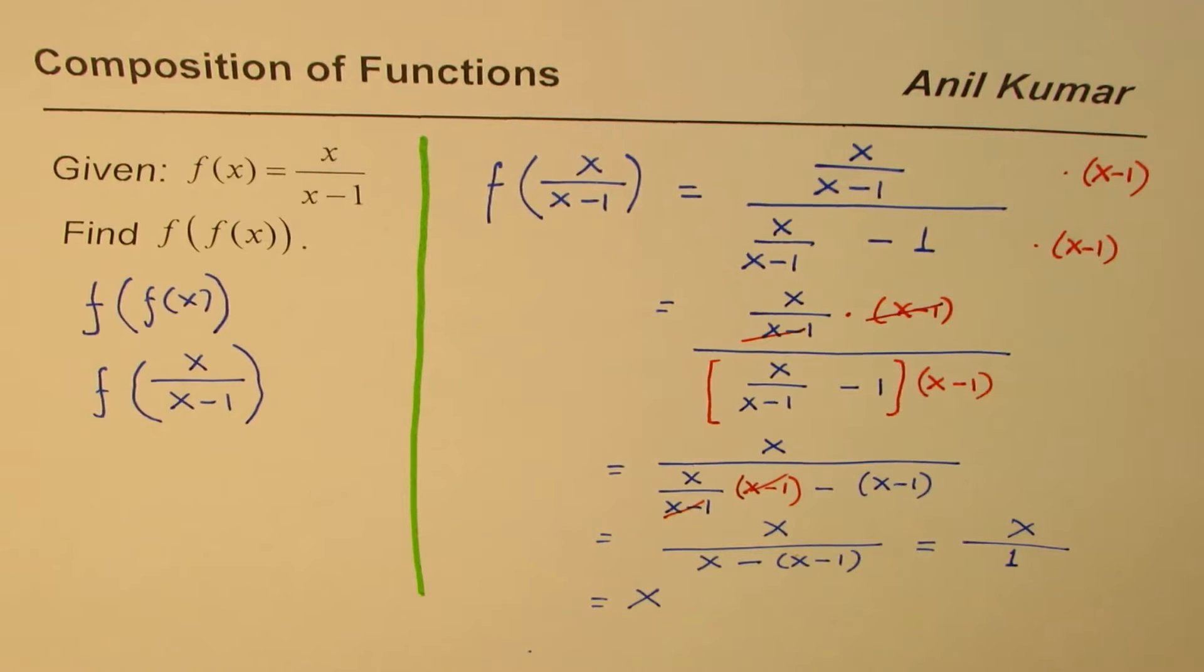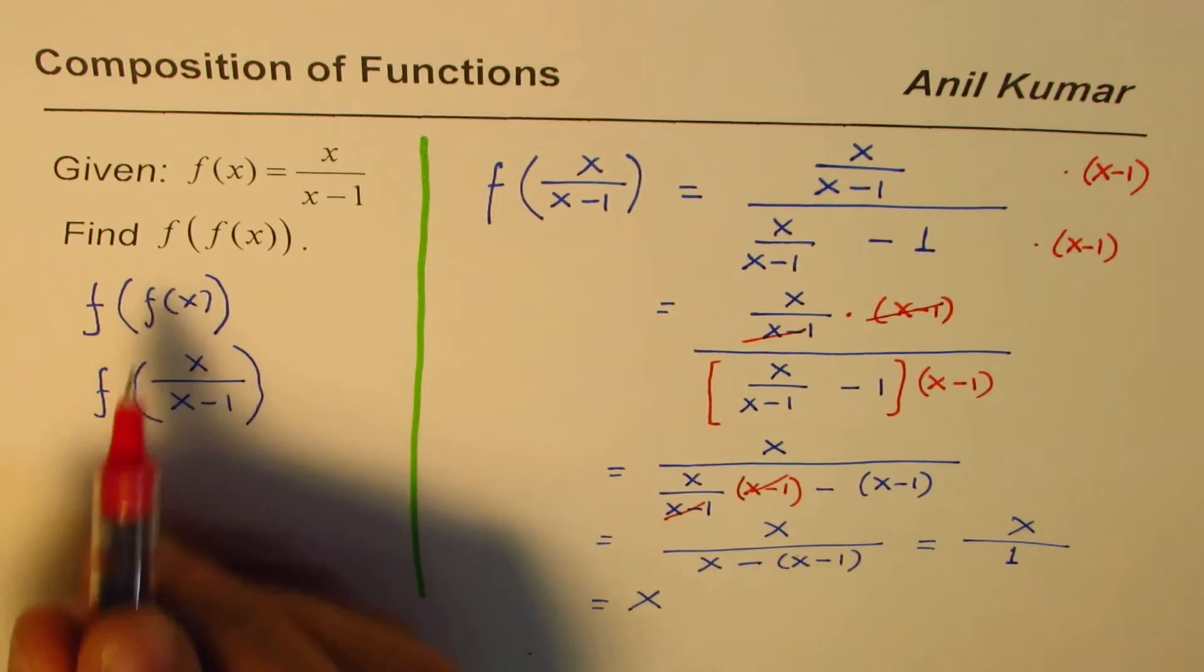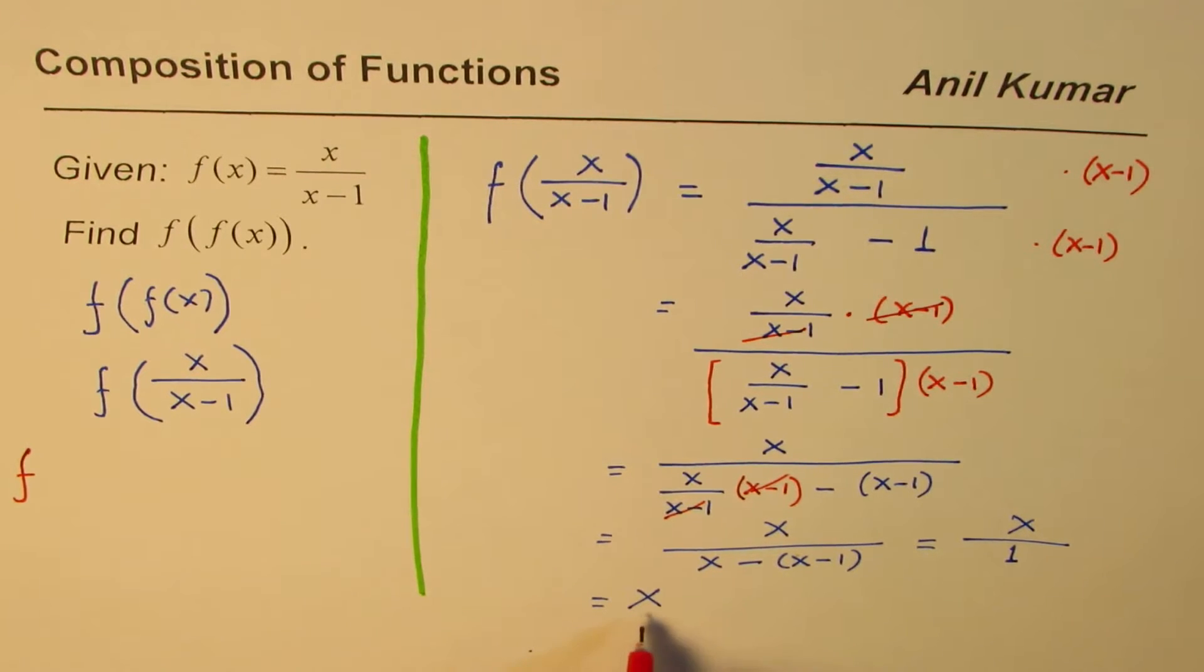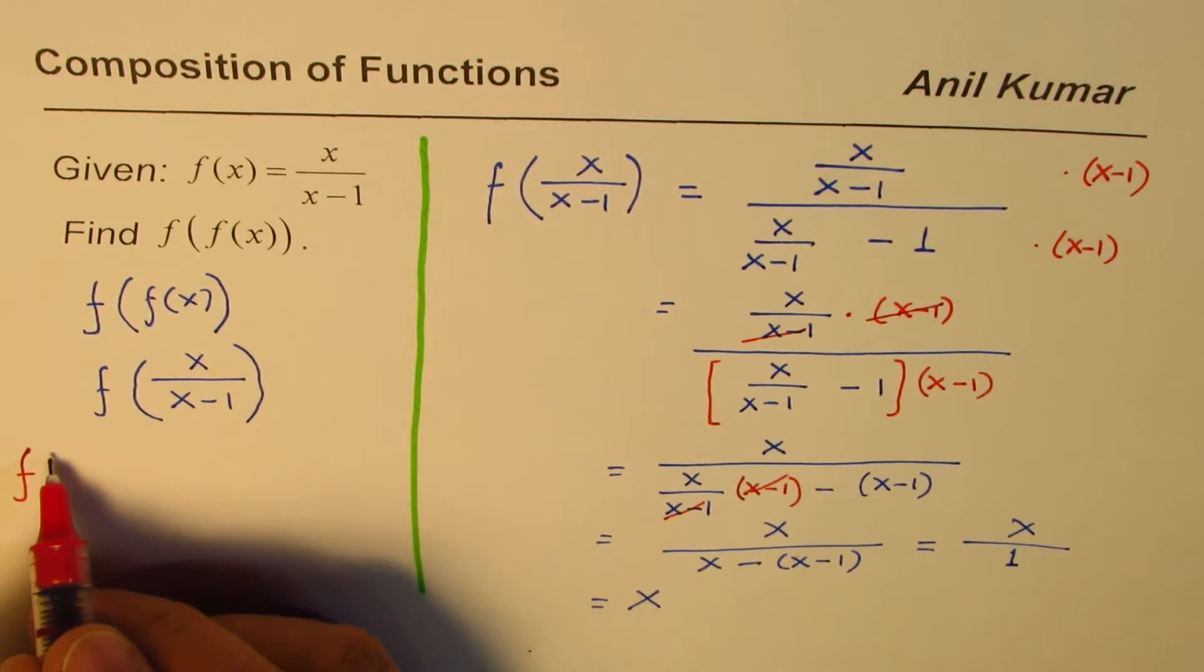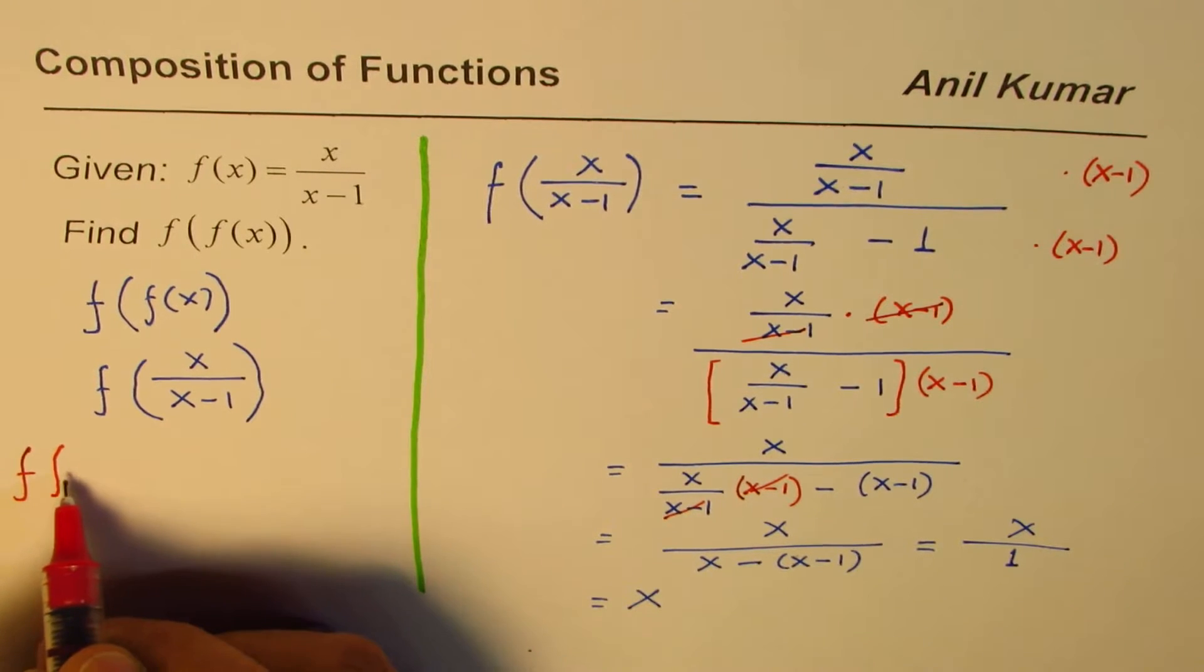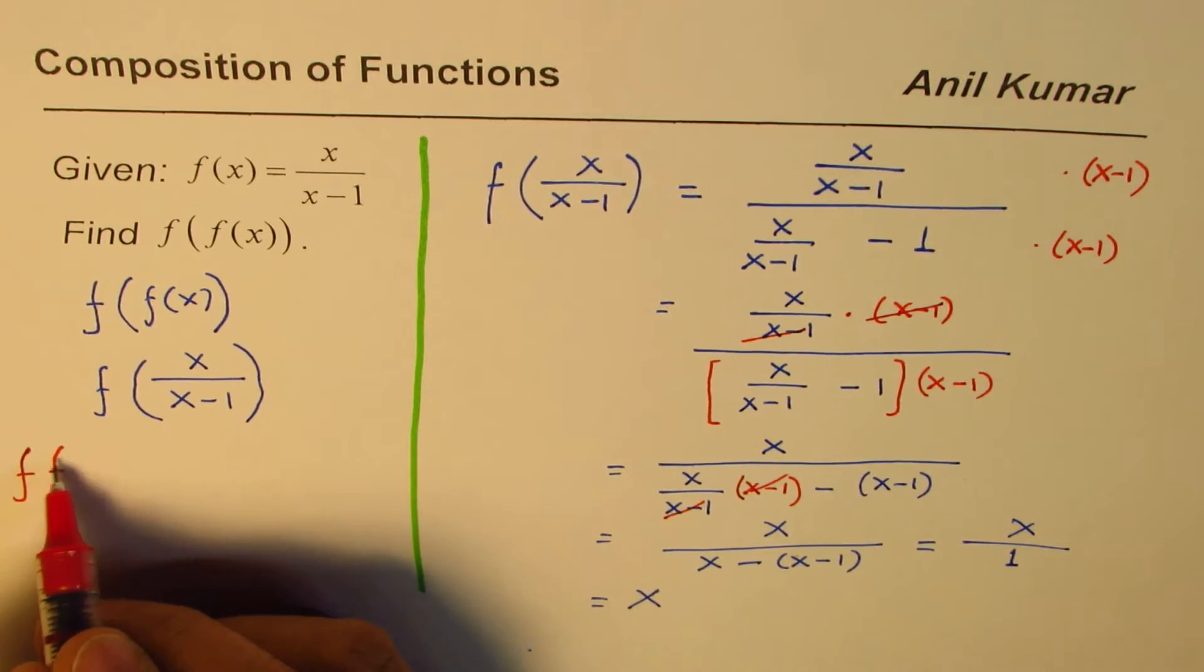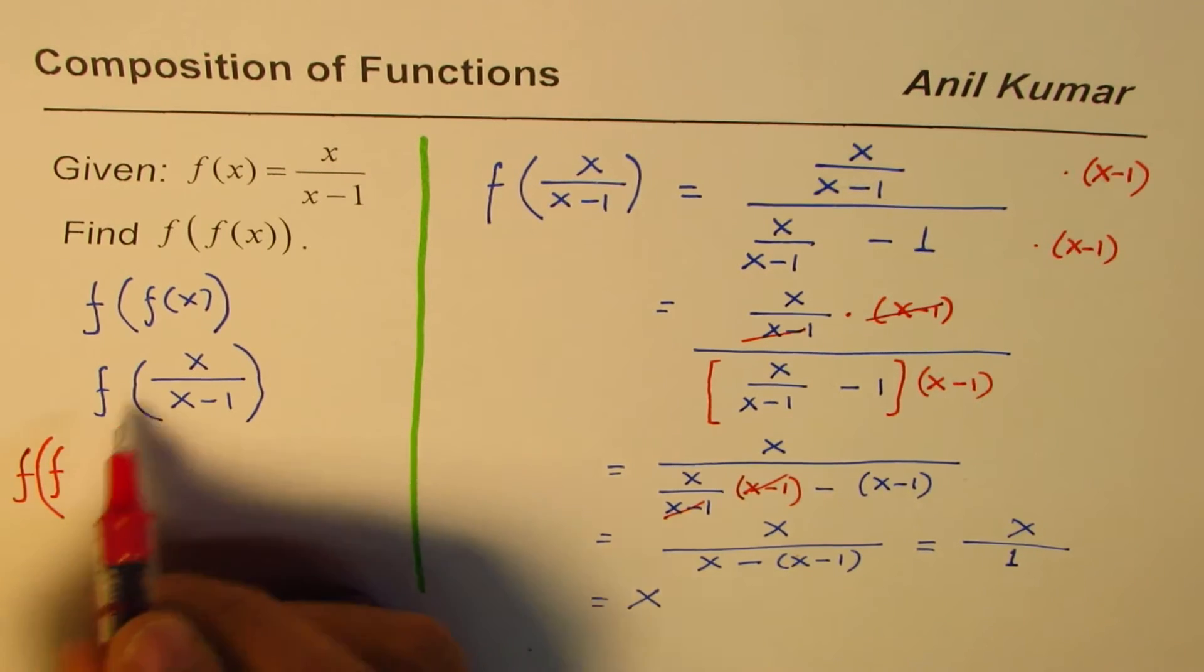Now as an exercise, what I'd like you to do is find the composition of this function a second time. So what we'll do here is f of f of—we do composition of function by itself. We have done one layer.